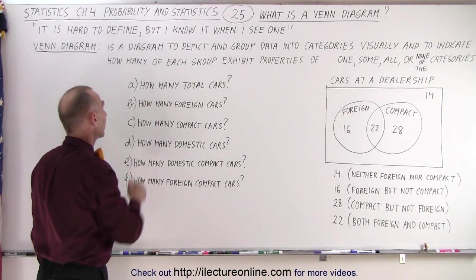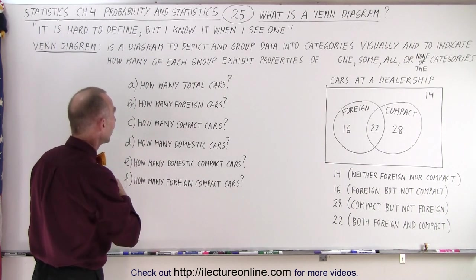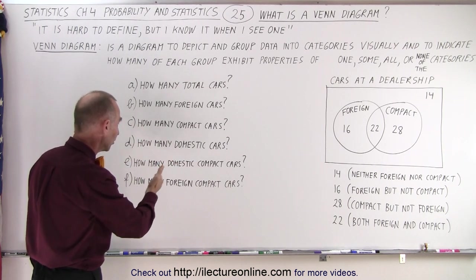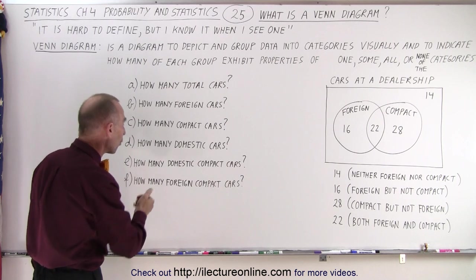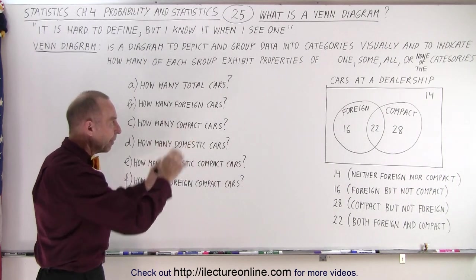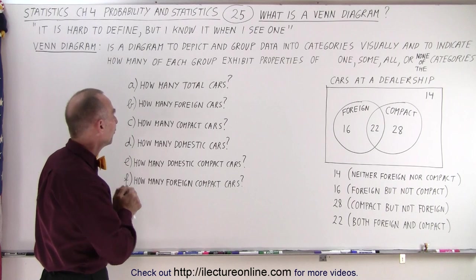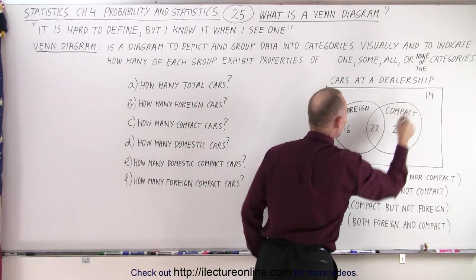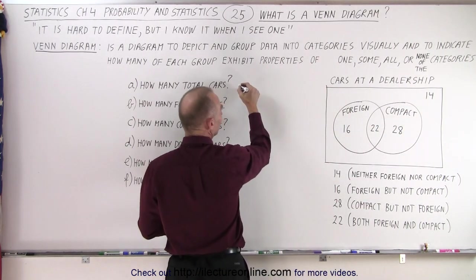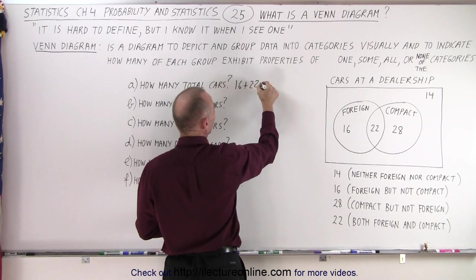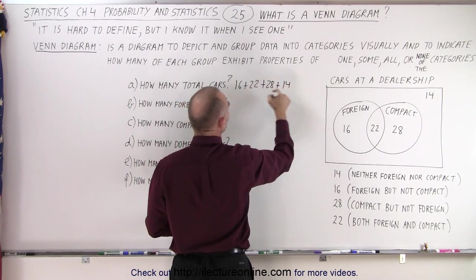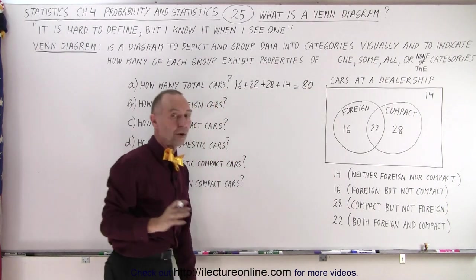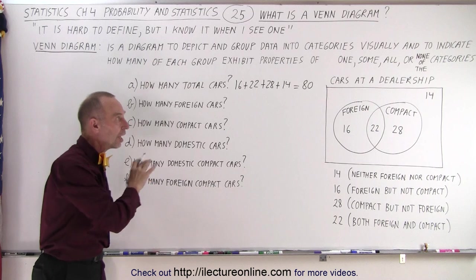Let's say we're trying to answer the following questions: how many total cars do we have, how many foreign cars, how many compact cars, how many domestic compact cars, and how many foreign compact cars? To find the total cars we simply add up all the numbers. In this case that would be 16 plus 22 plus 28 plus 14, which equals 80 total cars.